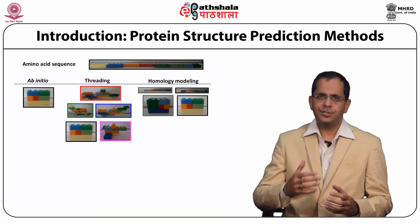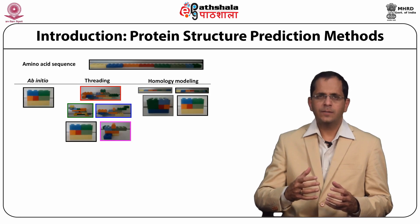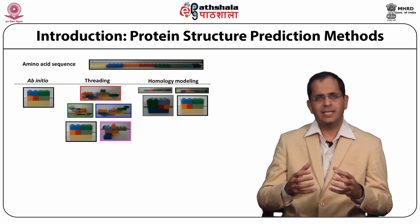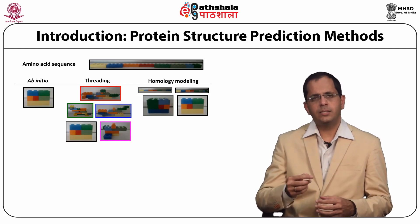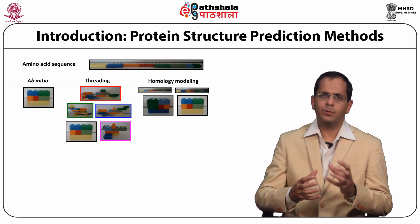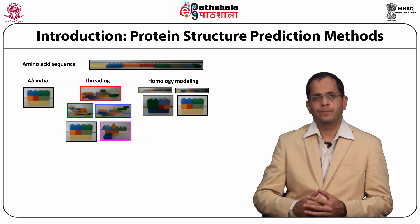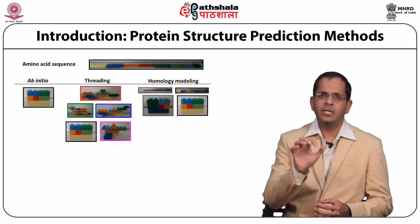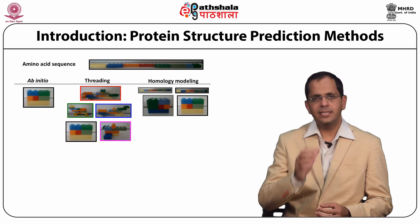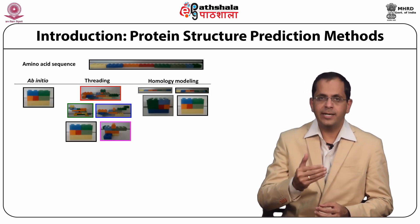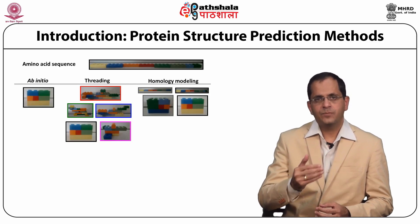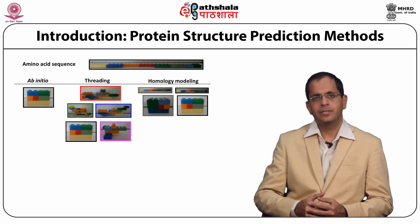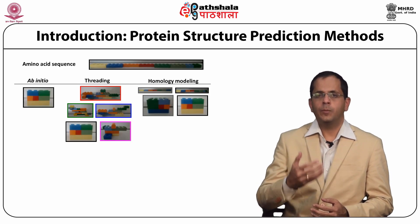Coming to the introduction on homology modeling. First of all, when you talk about the possible methods in protein structure prediction, you need to understand that we are trying to derive a particular protein structure from its amino acid sequence. The input is the amino acid sequence of a particular protein. Using this sequence, we are going to predict the structure using any of three methodologies: ab initio, threading, or homology modeling.